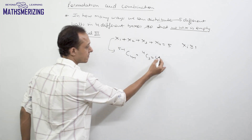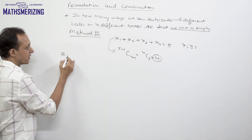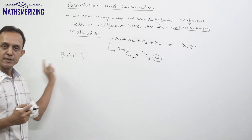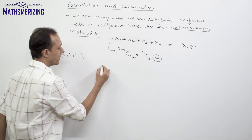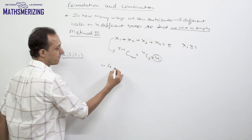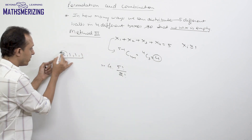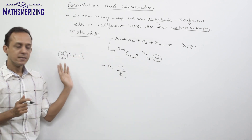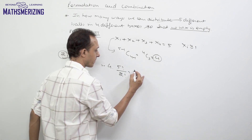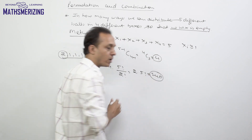Once we have the distribution of identical balls, we know the distribution will be 2, 1, 1, and 1. Now we arrange the actual balls in the boxes, which can be done in 5! / 2! ways, since the 2 balls going into the same box are interchangeable in terms of grouping. So it is 4 × 5!/2! = 4 × 60 = 240.